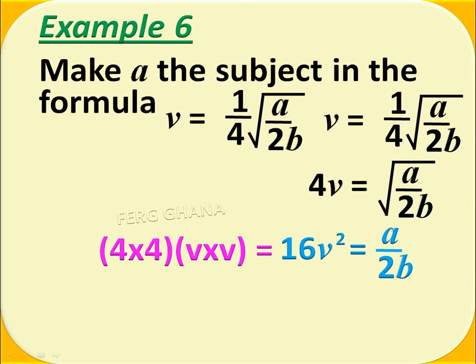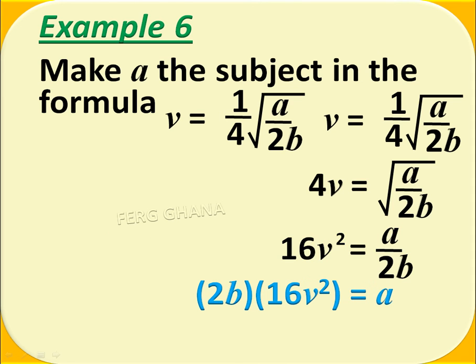Now we are ready to make A the subject. We realize that 2b is dividing a, so 2b must multiply the 16v squared. So 2b times 16v squared equals a. And 16 times 2 gives us 32, so 32bv squared equals a.